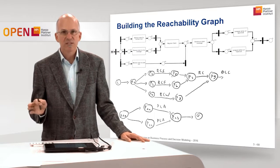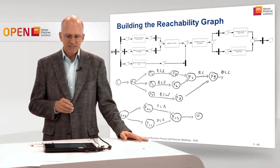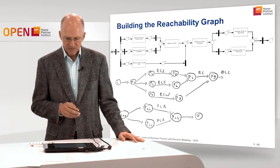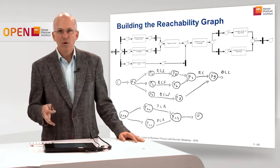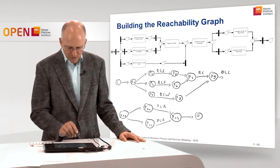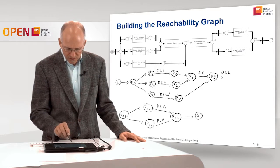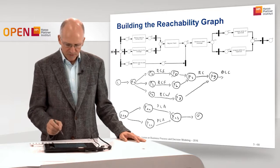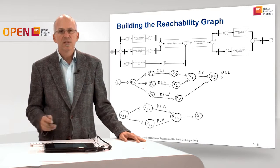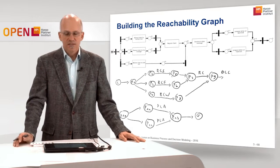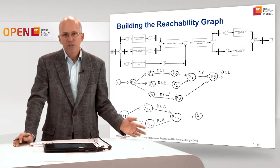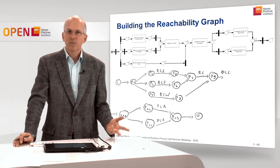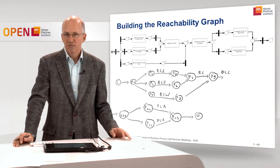So we already checked the first soundness property. The second soundness property is: if there is a token on place O, then there is no other token in the net. We need to check each state whether there is a token on O. We find only one such state — the last one — and in that state there is only a token in O with no other token in the net. Therefore, property 2 is also satisfied.